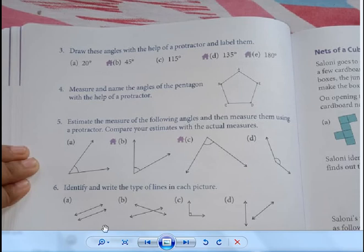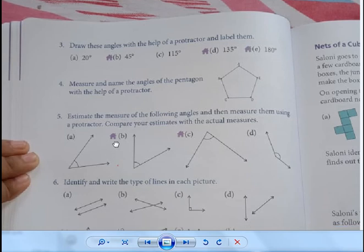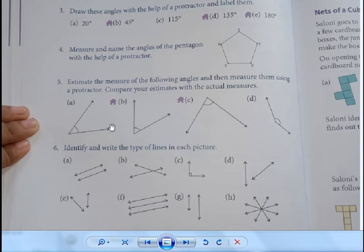So acute angle, angle is protractor and label them. In the video we have to give the arrow to the left side and put the arrow sign. Clear?